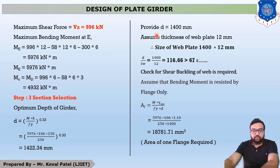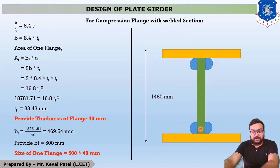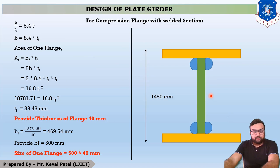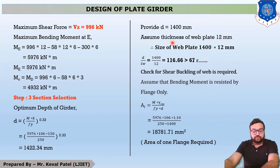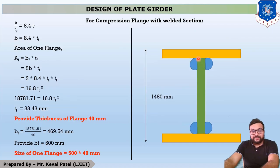We provide our depth of the web portion as 1400 mm. The thickness of the web plate is generally 8 mm to 12 mm. In this example, we assume the thickness of the web plate is 12 mm. So the web portion size is 1400 × 12 mm.